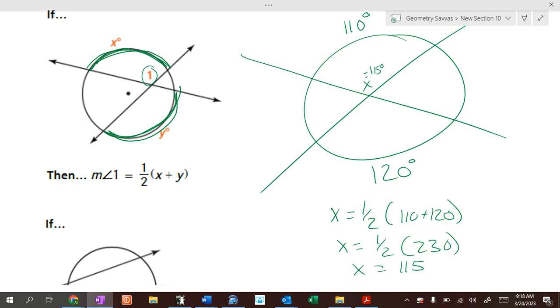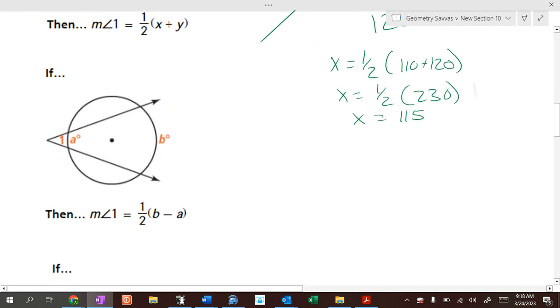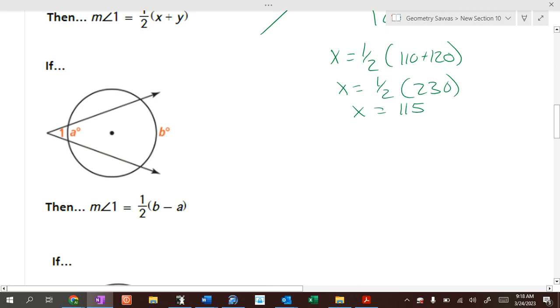Now, that's for if the angle is on the inside of the circle. Inside we add, outside we're going to subtract. If angle one is on the outside of the circle, we take one half of B minus A, big arc minus the little arc, one half of big arc minus the little arc. Easy peasy lemon squeezy. All we do is subtract.